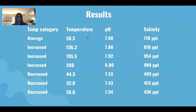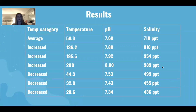The original temperature of the ocean water was 58.3 degrees. The original pH level was 7.68 and the original salinity level was 710 parts per thousand. As you can see, when the temperature was increased, the pH level and the salinity level also increased. And when the temperature was decreased, the pH and the salinity levels also decreased.